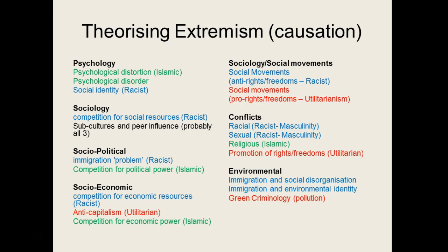Conflicts can be racial, sexual or religious — thinking around rights and freedoms and how those conflicts manifest themselves, and what the socio-political and economic impacts and responses are. Finally, there is the environmental dimension: green criminology, animal rights, animal testing, the rise of vegetarianism and veganism — some of that has led to a stronger environmental rights movement. From a right-wing point of view, immigration has impacted both socially and on the environmental identity of areas. These are some examples of causation factors we'll go into in more detail over the coming weeks.